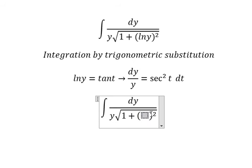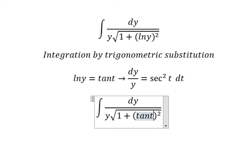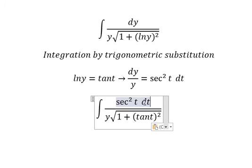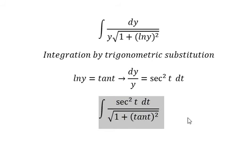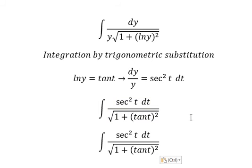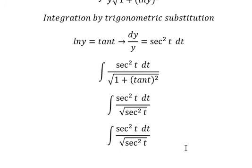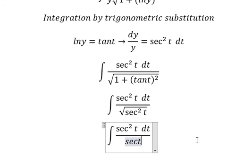ln y we change to tan t. dy over y we change by secant squared t dt. Then 1 plus tan squared t we change to secant squared t. Taking the square root of secant squared t, we get secant t.